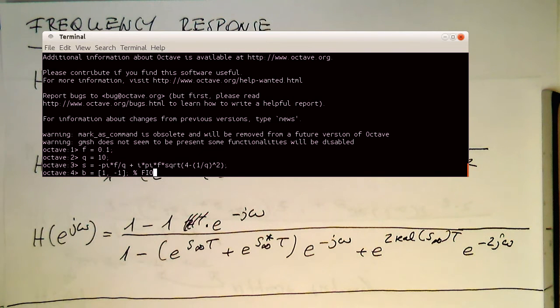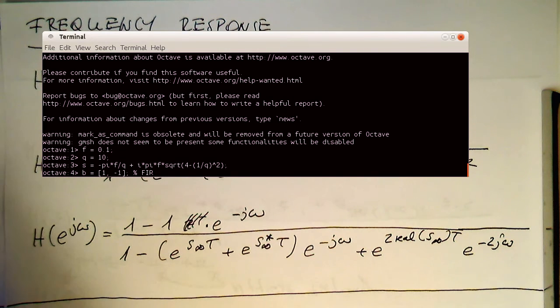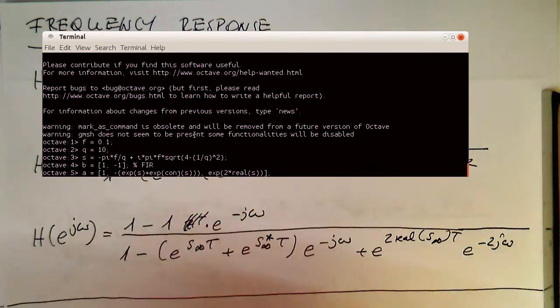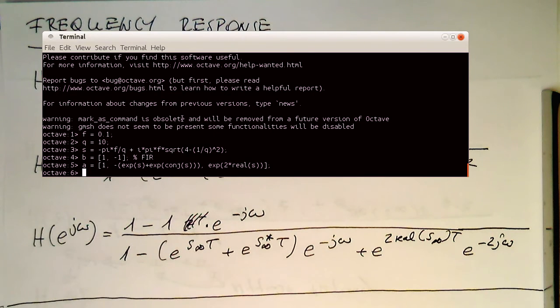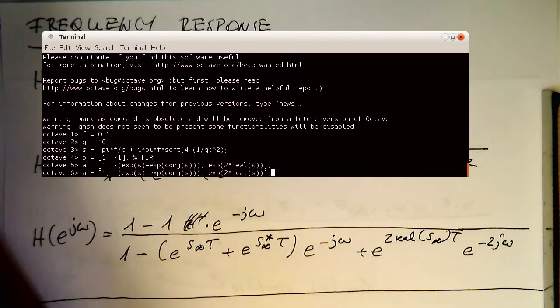What is a bit more complex here are our IIR coefficients here. So that's our 1 here and the exp of S and the conjugated S infinity here and then we add our exponential of 2 times the real value of the S infinity here. So these are our IIR coefficients.